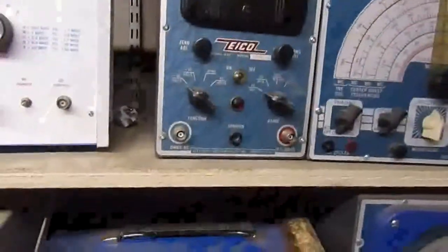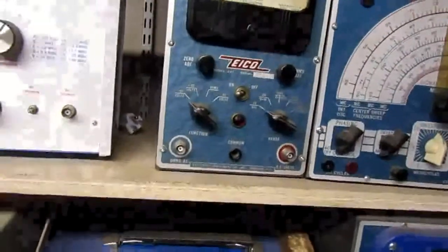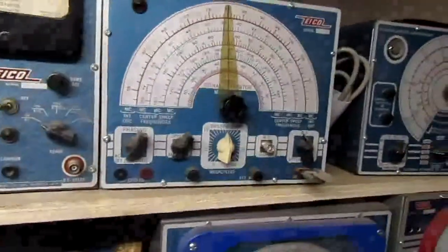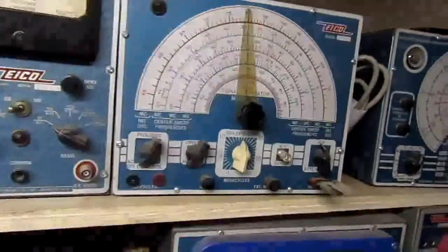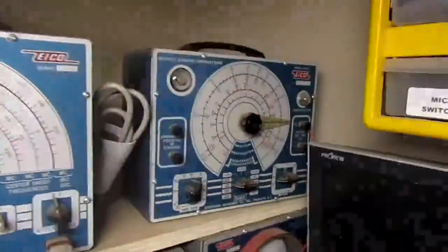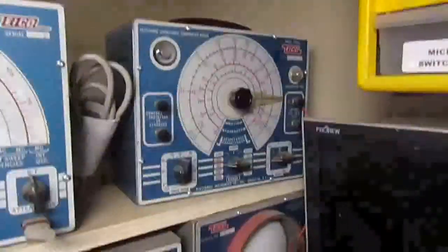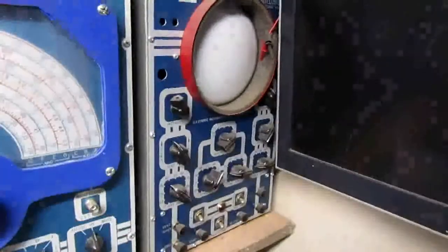And what is this one? This is the 221, I believe. And then we have the sweep meter. We have the capacitor checker. We have the 460 push-pull scope.